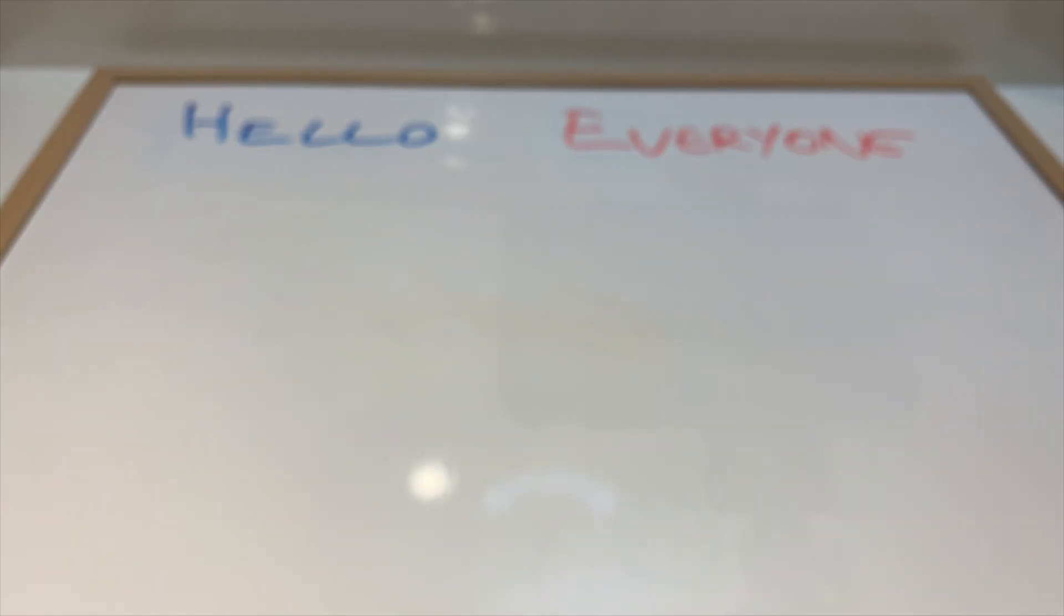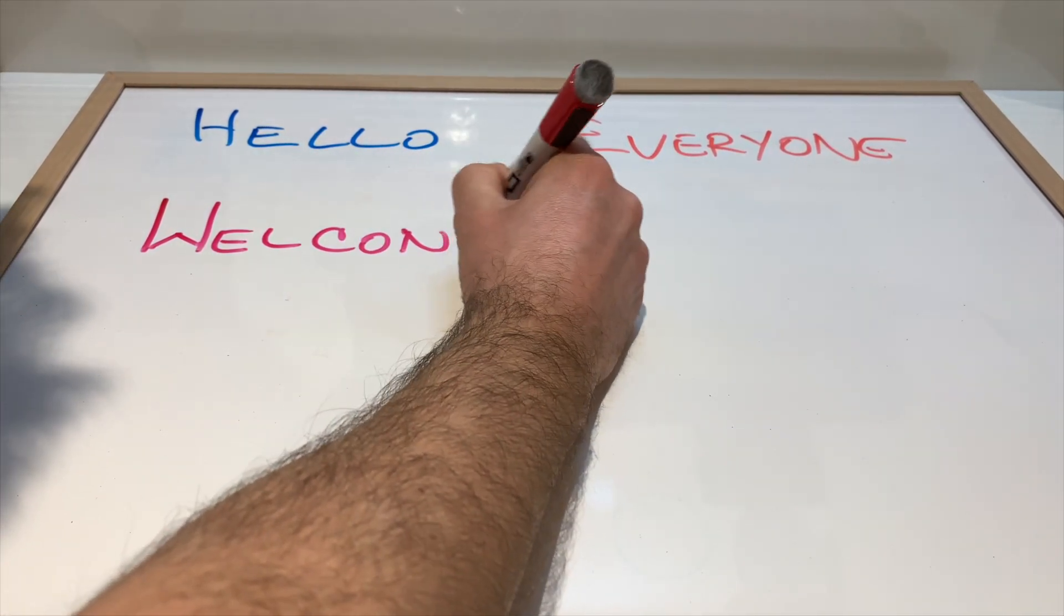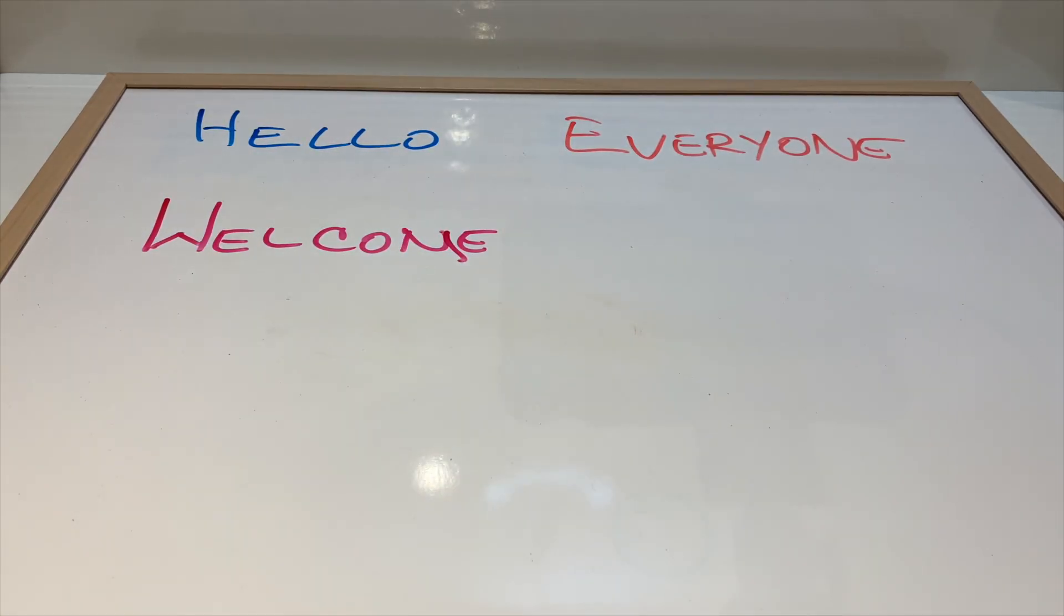On the other hand, permanent markers rely on inks with a strong adhesive to stick to almost any surface you write on.